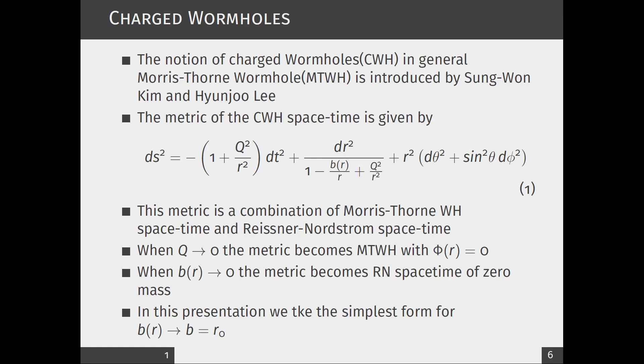The metric introduced by them is equation number one. This metric is a combination of Morris-Thorne spacetime and Reissner-Nordstrom spacetime. When the value of charge Q tends to zero, the metric will reduce to Morris-Thorne wormhole with φ(r) = 0. When the throat function b(r) tends to zero, the metric reduces to RN spacetime of zero mass.